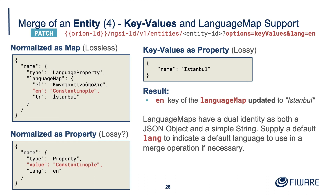Language map support will also work. If you have a language map that's a property — say Istanbul, Constantinople — and you get a normalised output of a language map as a property, it will have type and this extra lang thing in there. If you do it as key values and get back the language type, it will just look like name: Istanbul, name: Constantinople. So if you put the necessary decoration on the URL, it will just update the single language that you supply. It is perfectly possible to do key-values for merge patch, also for language properties.